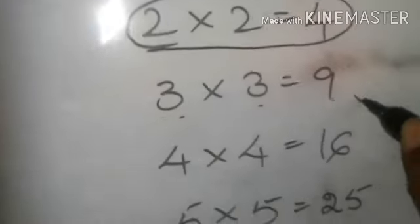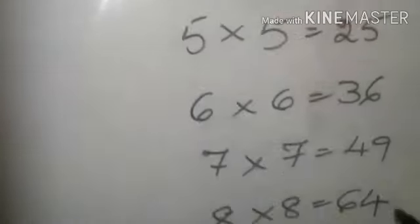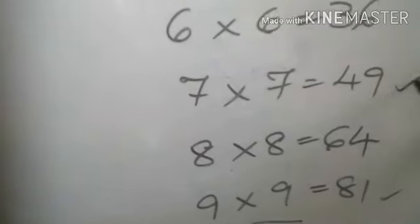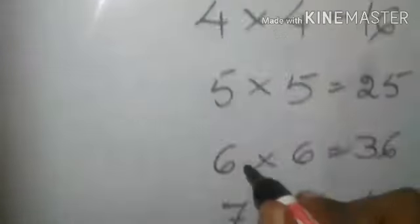Now select one number here and the same number should be there as well. See, check the last number is 9. So either it should be this, three into three is 9 or seven into seven is 49 because the last number is 9. So let us check it out by 3 first. Then let's go for 7.